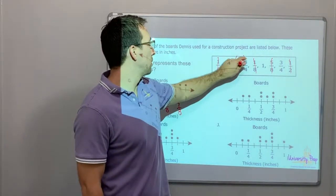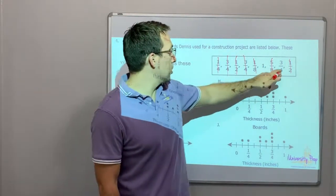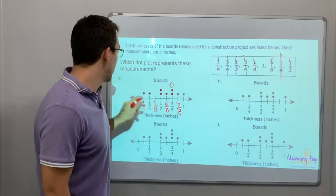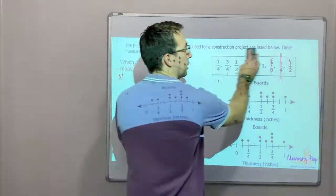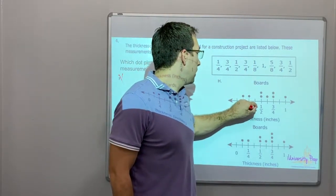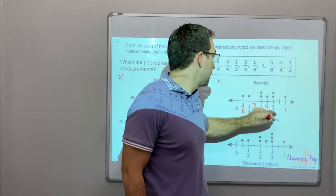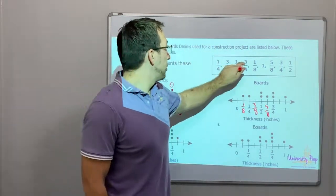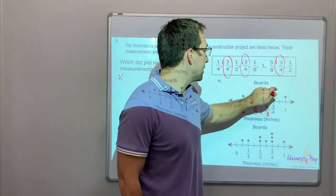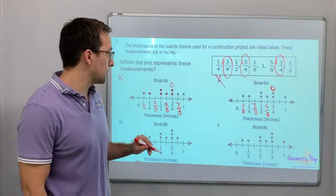Three-quarters: an extra three-quarters should be right there, but it shows seven-eighths instead — so F is wrong. Checking the next option: one-eighth, three-eighths, five-eighths, seven-eighths, and one. Three-quarters should have three dots, but this option doesn't have that — so it's not H either.